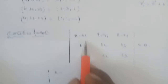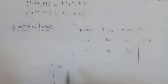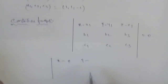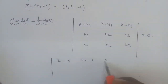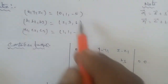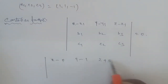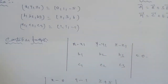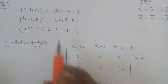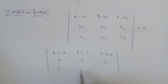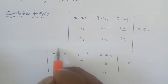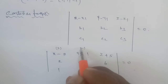We substitute: x minus x1, where x1 = 0, so x minus 0; y minus y1, where y1 = 1, so y minus 1; z minus z1, where z1 = minus 5, so z minus (minus 5). Then b1, b2, b3 are 2, 3, 6 and c1, c2, c3 are 1, 1, minus 1, equal to 0 as a determinant.